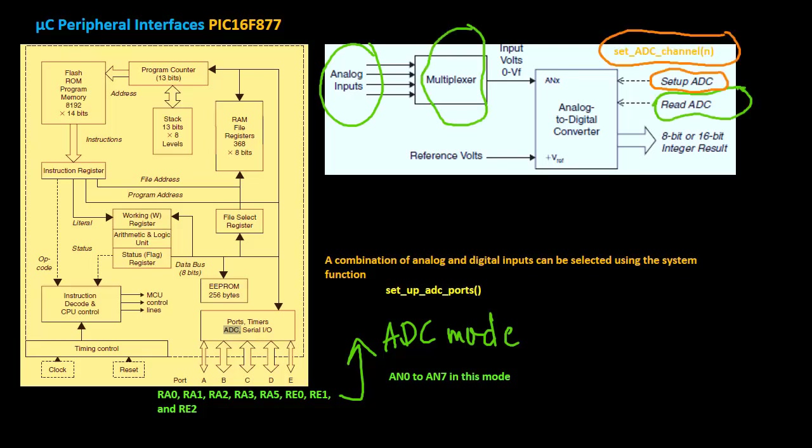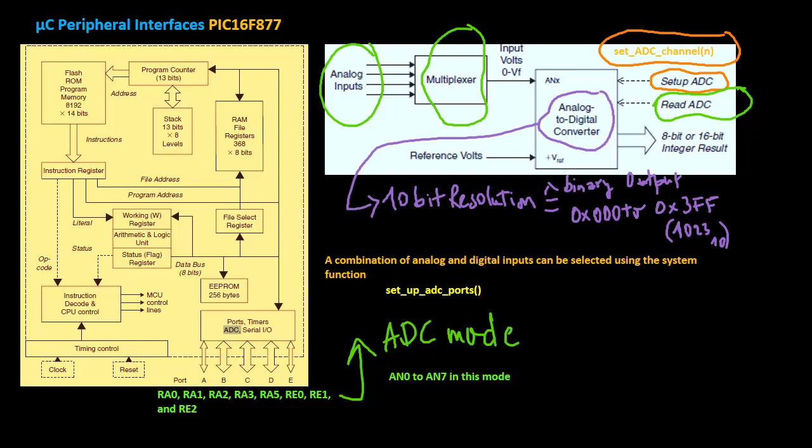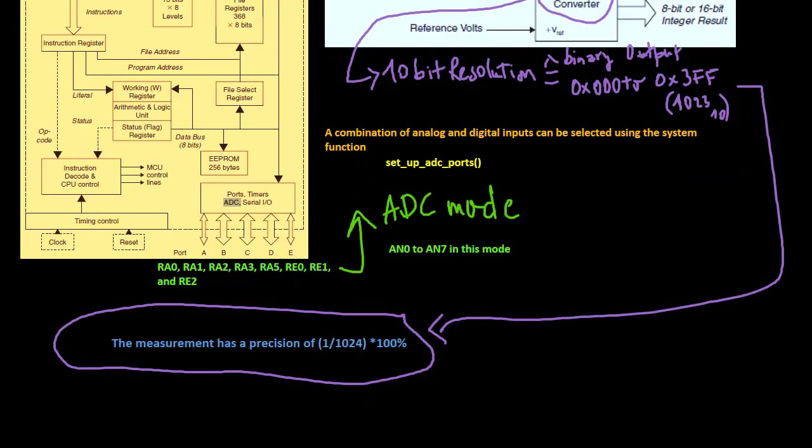The function set_adc_channel selects the input channel. The analog to digital converter module has a resolution of 10 bits. Therefore, the measurement has a precision slightly better than 0.1%. This is good enough for most practical purposes.